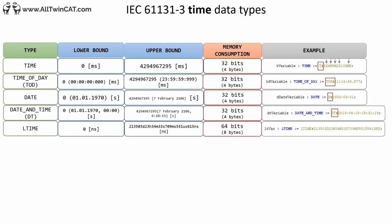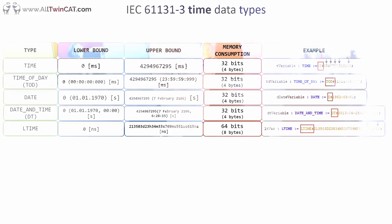Finally we have LTIME, which is short for long time — an 8-byte data type and a higher resolution version of TIME. Where TIME allows days, hours, minutes, and milliseconds, LTIME also allows microseconds and nanoseconds. The resolution is 1 nanosecond. In very high speed sub-millisecond tasks — which are easily achievable with Beckhoff PLCs and TwinCAT 3 — this data type comes in handy. You have to write LTIME# before the value.